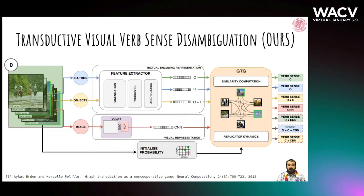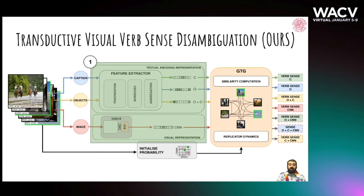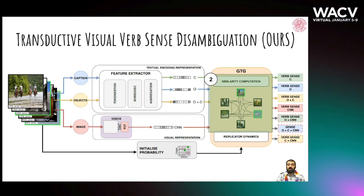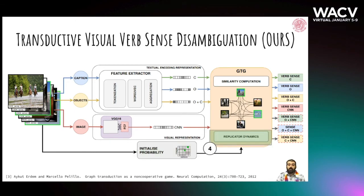Given a dataset of image-verb pairs, with a set of labelled (green border) and unlabelled (black border) samples, our model is divided into four parts. We first extract features from the chosen modality, which is textual, visual, or multimodal. We then build a graph in which each node is an image-verb pair, and compute pairwise similarities as the edge weights. Then we initialize the assignment probability between image-verb pairs and senses. The sense propagation between labelled and unlabelled pairs is performed through a dynamical system until convergence, at which point all nodes get labelled, hence disambiguated.